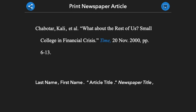The newspaper title is followed by the publication date. We will provide the day, month, and year that the article was published. If the month is more than four letters long, abbreviate it. We will then include a comma.